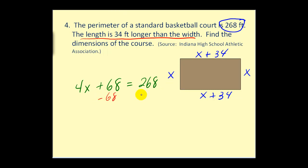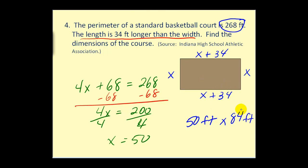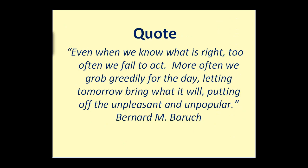Let's subtract 68 on both sides. This comes out to 200. We'll divide by four. Again, the most challenging part is setting it up. We have x equals 50. Now again, we need to make sure we answer the question. The question is find the dimensions of the court. The width is equal to x. Well, x is 50. So the dimensions would be 50 feet by, and the length is x plus 34. 50 plus 34 would be 84. So the dimensions of the basketball court would be 50 feet by 84 feet. I hope you found this video helpful.